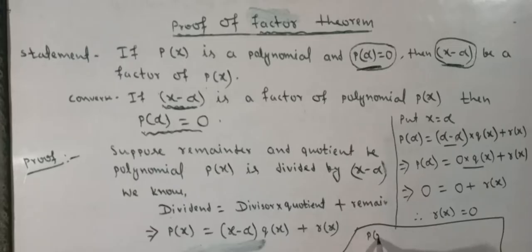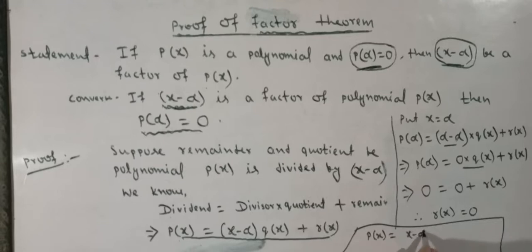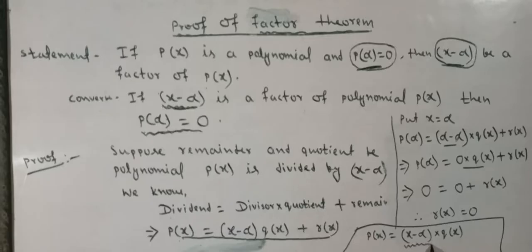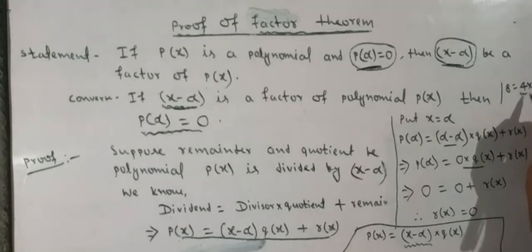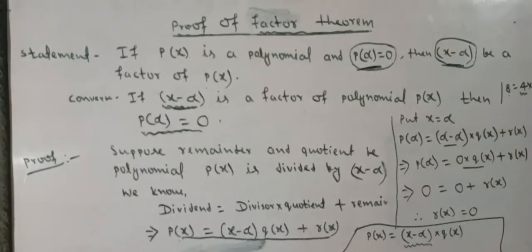So px equals x minus alpha into qx plus remainder. Since the remainder is 0, px equals x minus alpha into qx. This means x minus alpha is a factor of px — just as 8 equals 4 into 2, so x minus alpha is a factor.